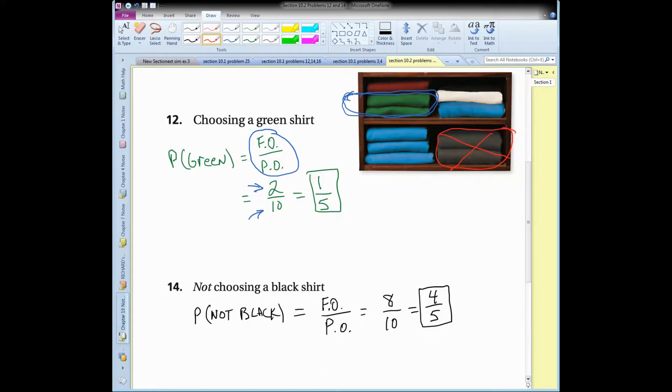Well, how many t-shirts are left? I still have 10 shirts. How many of them are not black? Well, eight of them are. And I go ahead and simplify that. Eight out of 10 is four out of five or four-fifths. And we are done.